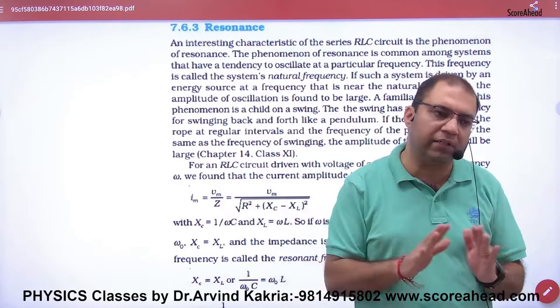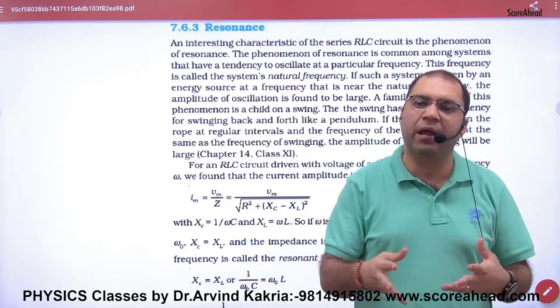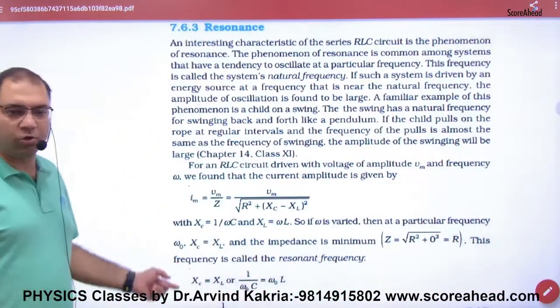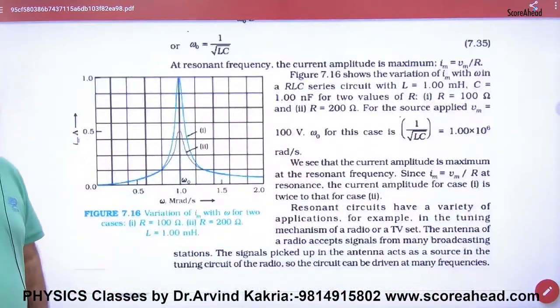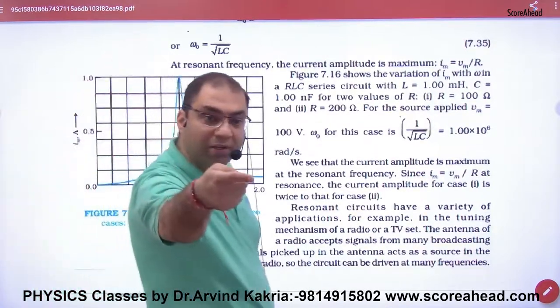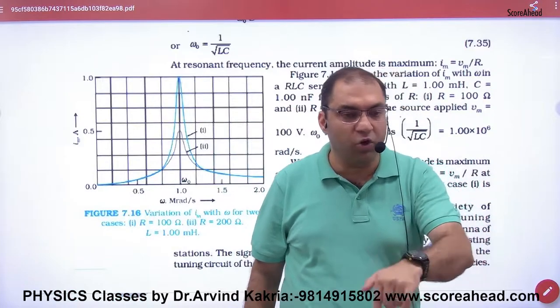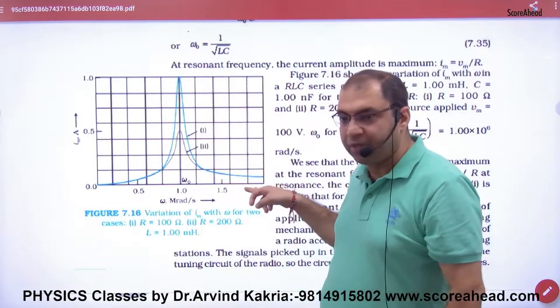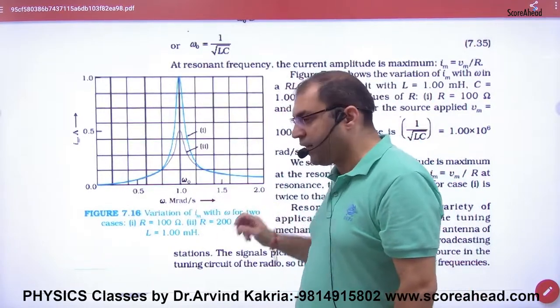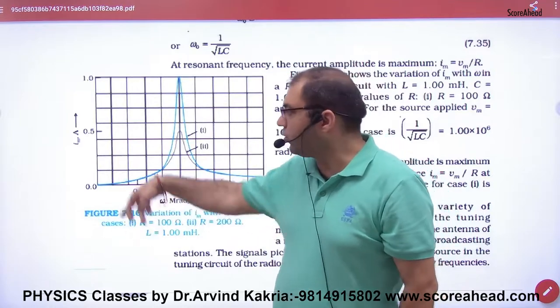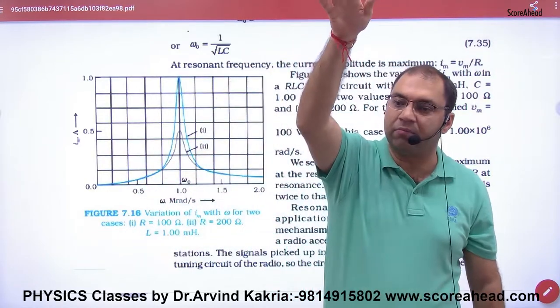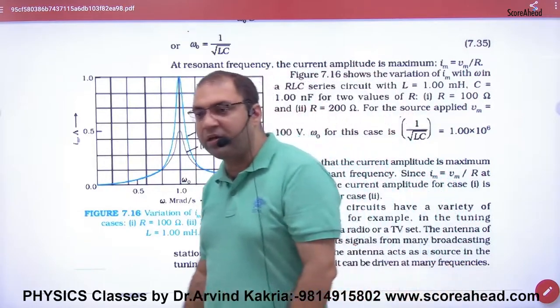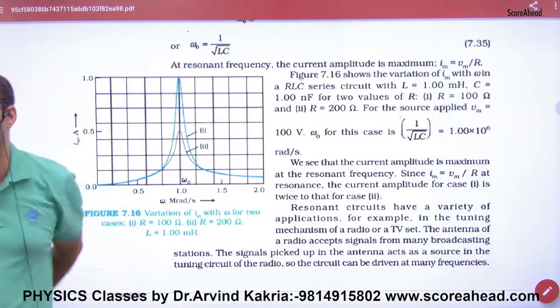Remember that in resonance, amplitude becomes very large. The same situation applies here - the current becomes maximum. This graph shows the variation - as the value of omega increases, the current is lower initially, then becomes maximum. The frequency at which this happens is the resonance frequency, where the current becomes maximum.